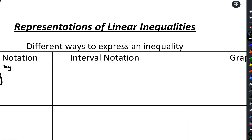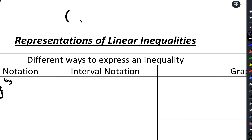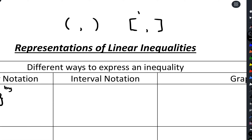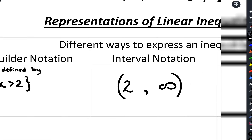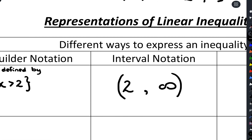For interval notation we have two types of parentheses: regular parentheses and square brackets, or a combination of the two. Square brackets mean the endpoints are included; parentheses mean the endpoints are excluded. Since x is more than two but can't equal two, we start at two and go to infinity. We use parentheses at two because it's not included. With infinity we always use parentheses because we can't define how big infinity is — we can always go bigger.